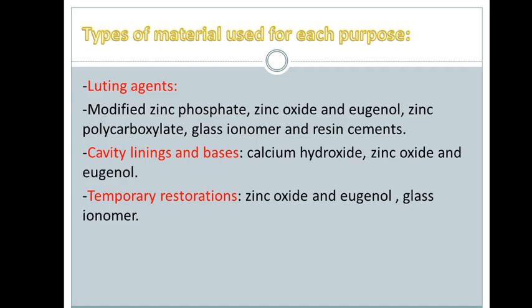Cavity liners and bases: the cavity liner, like calcium hydroxide, is used to protect the pulp from sensitivity. We use the base on top of the liner. So the first thing is the liner, and then we put zinc oxide eugenol on top of it as the base, to protect the pulp from sensitivity.